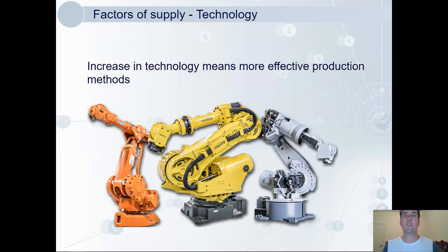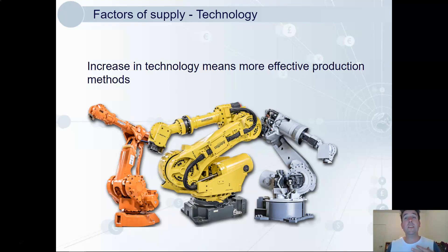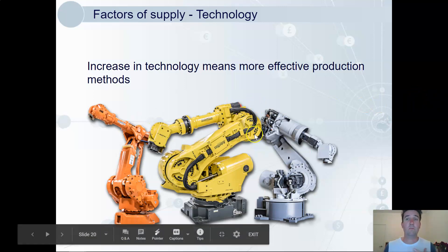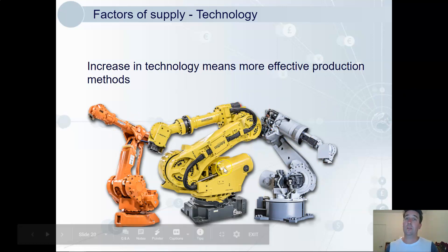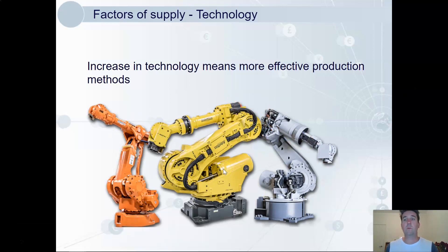An increase in technology can increase supply, mostly due to lowering costs of production. If technology didn't lower the cost of production, firms just wouldn't use it. Fifty years ago a factory would have been full of people; now it's more likely to be filled with robots. Decreasing costs increase profitability, so firms are willing and able to supply more.